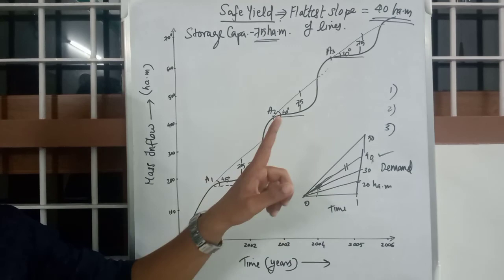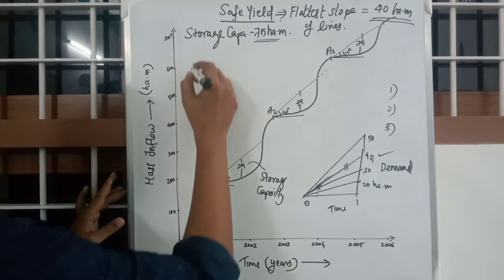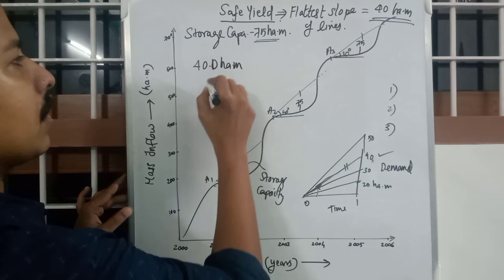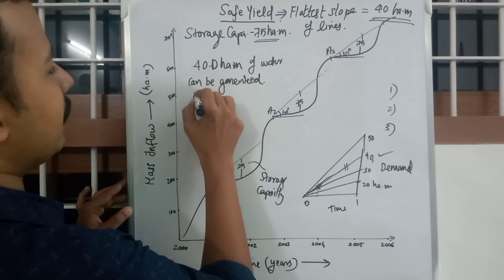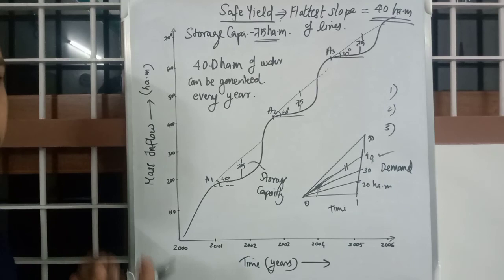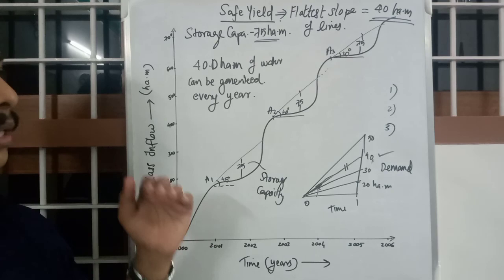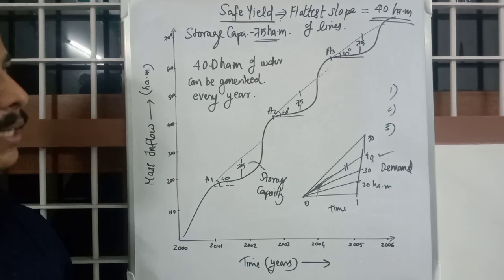We compared with the demand curve and got a safe yield of 40 hectare meters. That means 40 hectare meters of water can be guaranteed every year from our reservoir. Whatever the case — even if there is a drought or the least rainfall — you can always guarantee 40 hectare meters safe yield. I hope you understood both the concepts of storage capacity and safe yield.